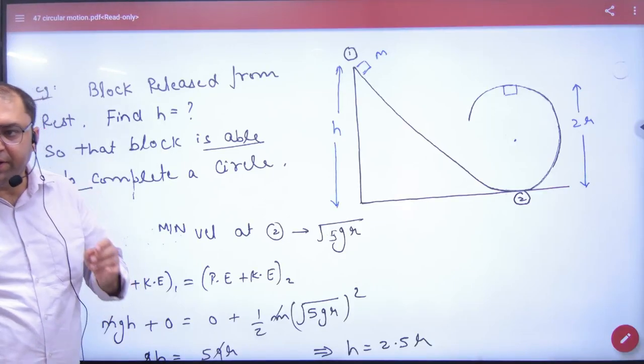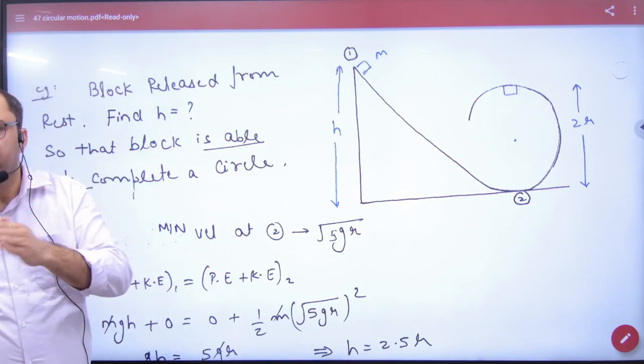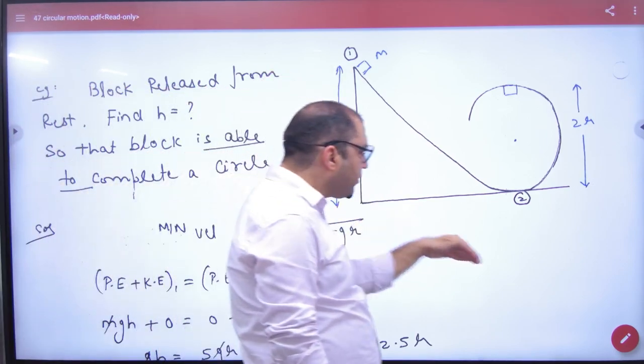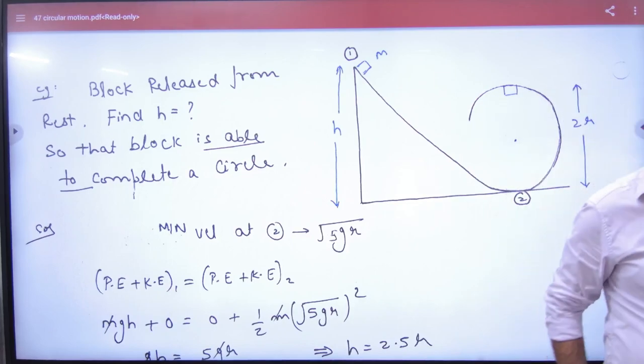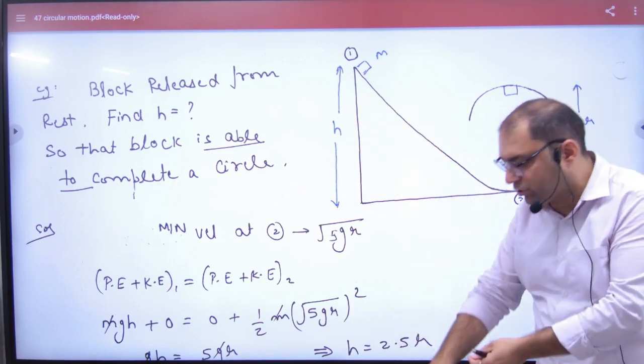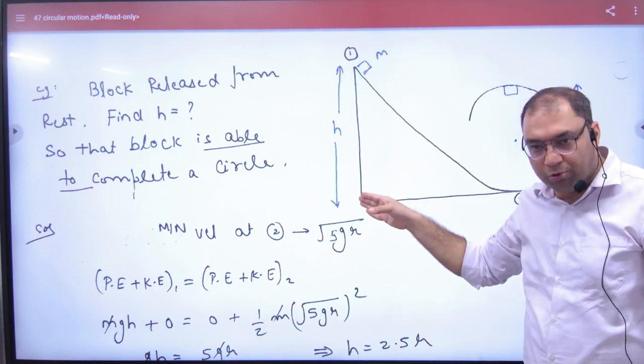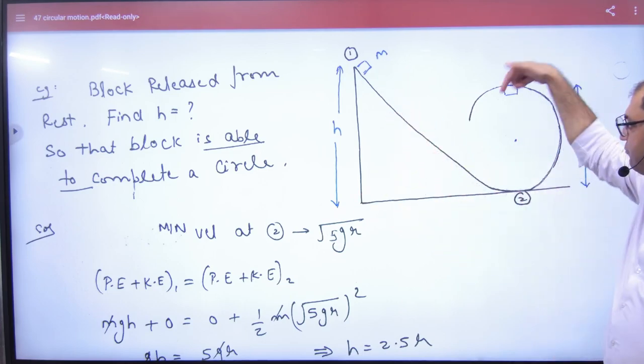We have released one block from here. There is no friction. The block slides and has to go through the circle. But will it complete the circle or not? If the height is very low, what will happen? How much height is needed for it to complete?